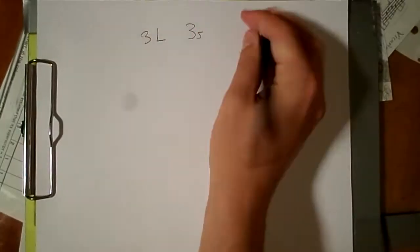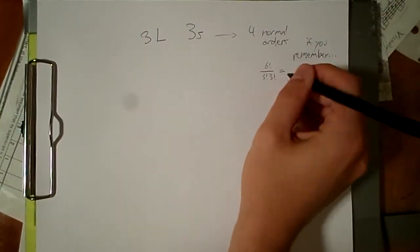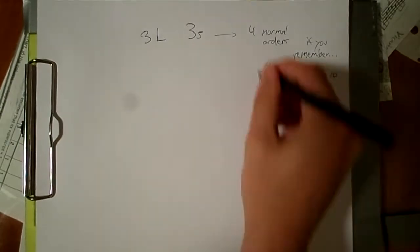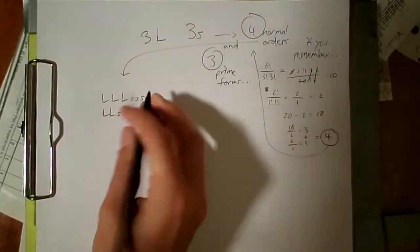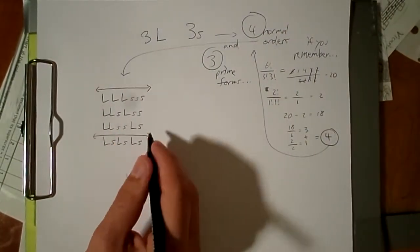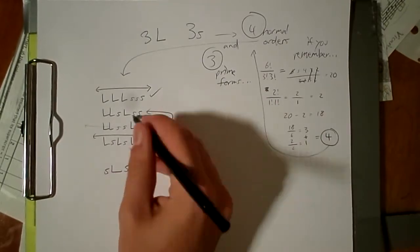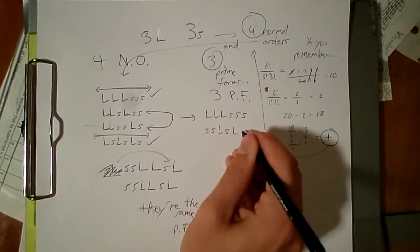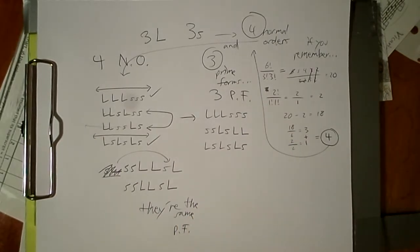Let's work one of these out to see the pattern. For example, 3L3s has four normal orders and three prime forms. See how two of the sets pair up because they invert to each other, and then two other sets are inversionally symmetrical. So two inversionally symmetrical normal orders plus one pair of normal orders equals three prime forms.